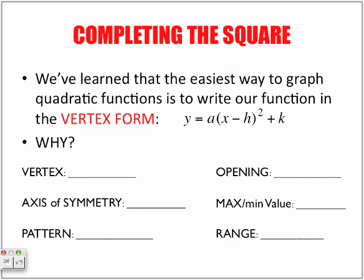So completing the square, we've learned that the easiest way to graph quadratic functions is to write our function in the vertex form, which is y equals a(x minus h) squared plus k. Why? It allows us to find all this information. Just to recap, the vertex, the opposite of that value which will represent our x value, and then this will represent our k value.